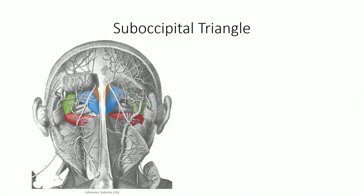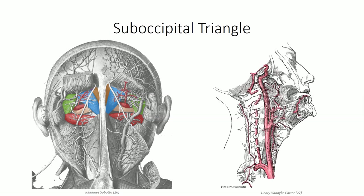Three of these muscles — the rectus capitis posterior major and both obliques — define a region known as the suboccipital triangle. The posterior arch of C1 can be found deep in this region, along with key neurovascular structures. The vertebral artery lies between the occiput and the posterior arch of C1 as it courses towards the brainstem. The suboccipital nerve emerges from the triangle and innervates all four of the suboccipital muscles. The greater occipital nerve emerges from inferior to the inferior oblique and courses superiorly to receive cutaneous sensation from the back of the head.